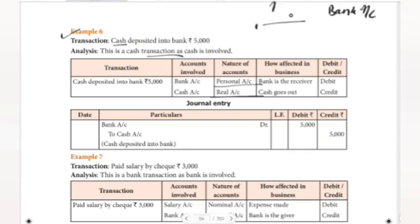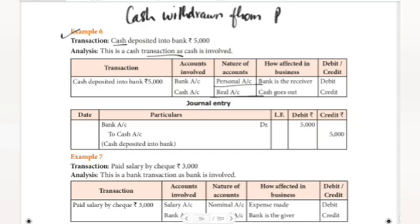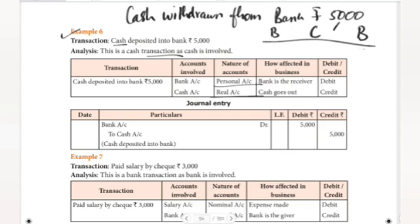This transaction is cash withdrawn from bank — rupees 5,000. Cash comes in — real account cash comes in — so cash is debited. Bank gives the money — bank is the giver — so bank account is credited. Transactions are reciprocal. Entry: cash account Dr. to bank account — being cash withdrawn from bank.